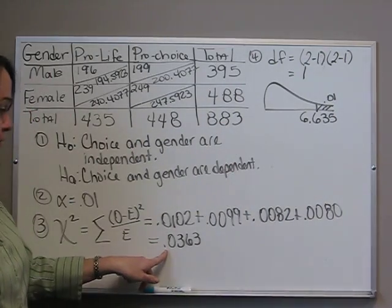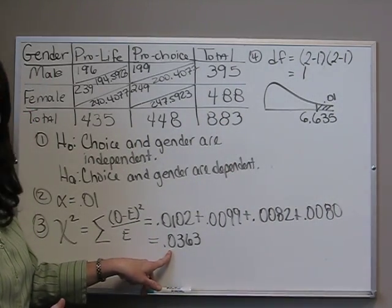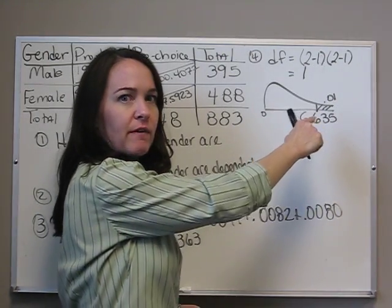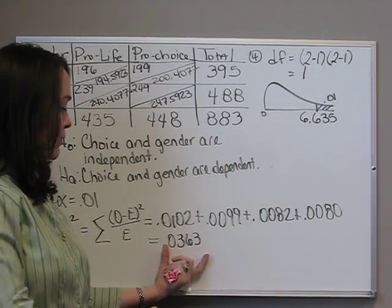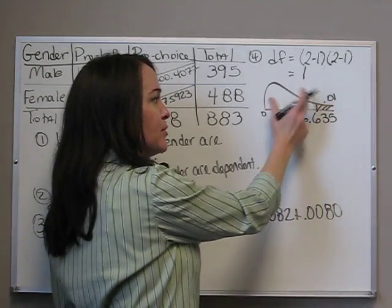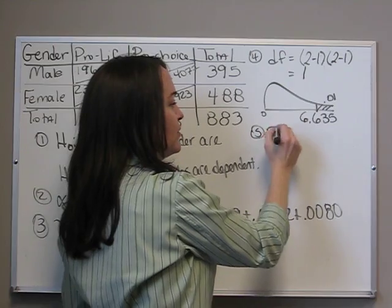Our decision comes from whether 0.0363 is between 0 and 6.635, or is it above? Well, 0.03 is definitely close to 0. It's between in our non-rejection region, so we fail to reject.